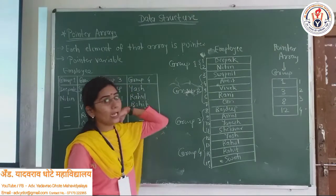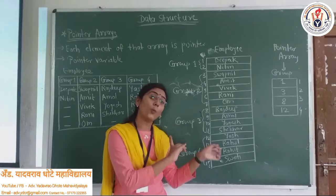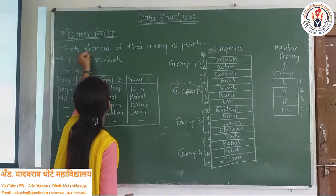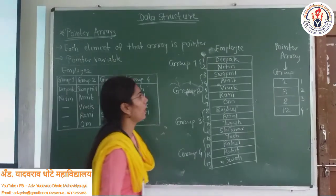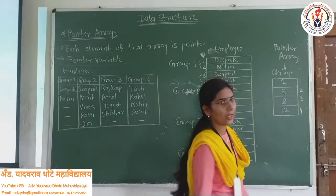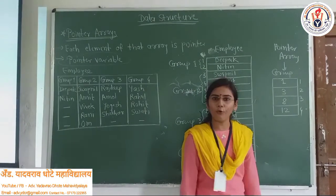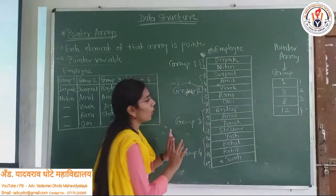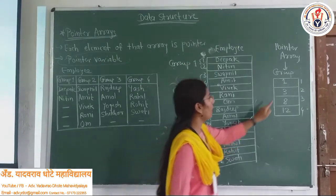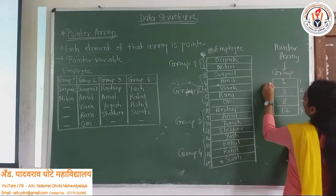Here every group needs one pointer variable pointing to it — the whole group has one variable pointing to it. We have to make every element a pointer variable. So here I have to create a pointer array which is called 'group,' with elements 1, 2, 3 and 4. Now look, group 1 is starting from here.